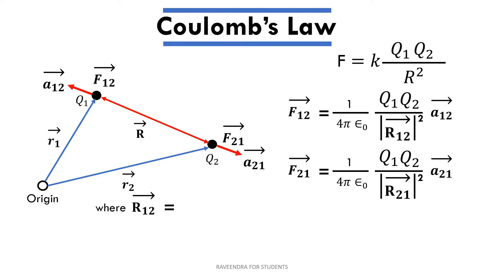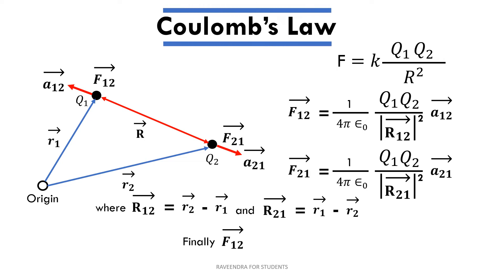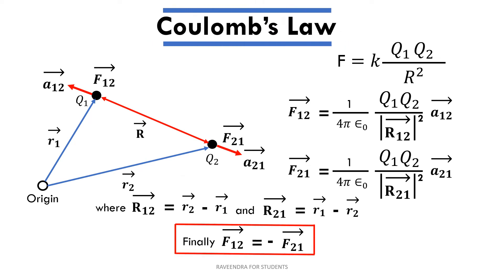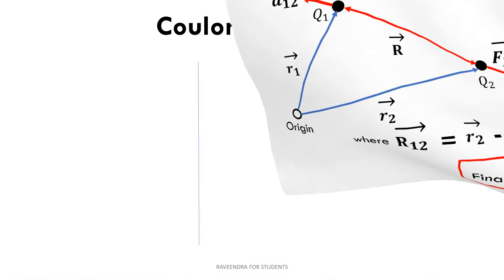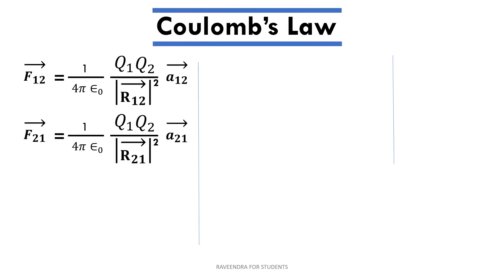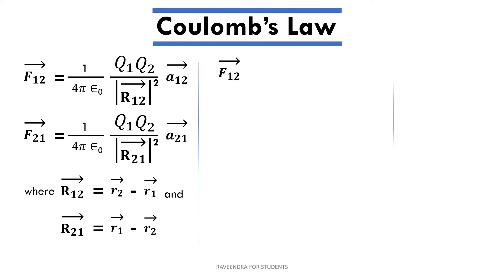Comparing the final forces at q1 and q2: r12 bar is given by the difference of position vectors r2 bar and r1 bar, and r21 bar is given by r1 bar minus r2 bar. Comparing the forces at both points, they are in opposite directions. Finally, we get that f12 bar equals minus f21 bar.